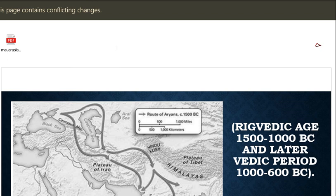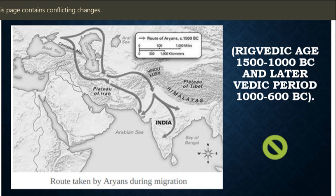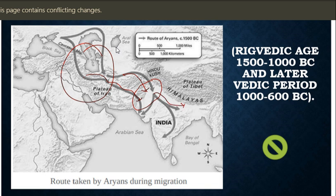This is the route followed according to the Central Asian Theory. Central Asia is here, and from there there was a movement of tribes we call Aryans. They first occupied the Saptasindhu region - the land of seven rivers including the Chenab and Jhelum. Then slowly they moved on to the Gangetic plains. This history runs from 1500 to 600 BC.